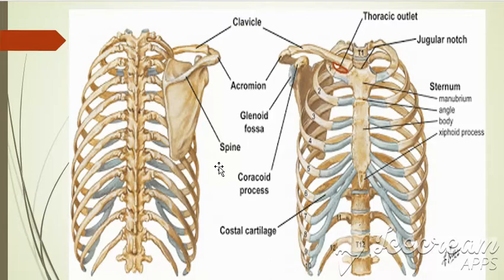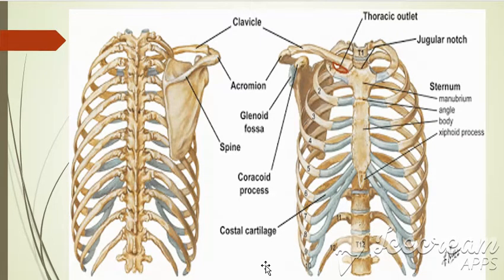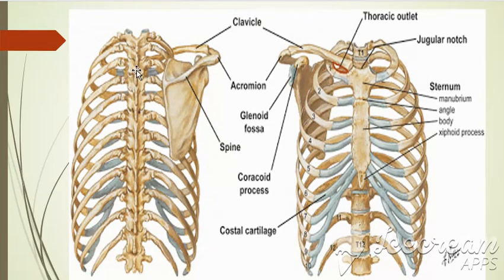Below the spine of the 7th cervical vertebra, all the thoracic spines can be palpated along the posterior midline. The 3rd thoracic spine lies at the level of the roots of the spine of the scapula. This is the spine of the 3rd thoracic vertebra — T1, T2, and T3 — and the root of the scapular spine lies at the level of the spine of the 3rd thoracic vertebra.